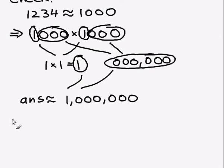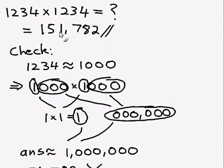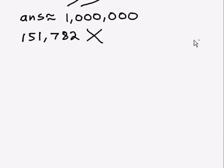Now if you look at our rounding off, we rounded both of our numbers down. So you'd expect our answer to actually be bigger than our estimated answer of a million. Now we got 151,000—that's a lot smaller than a million. So this probably means we've got the wrong answer. Our estimated answer has shown that we've probably done something wrong.